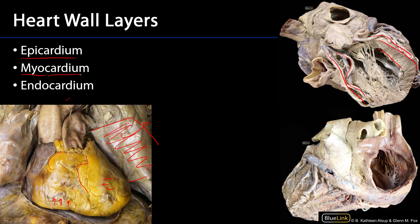The myocardium is then lined by endocardium, which covers the internal surface of the heart, including the cusps of the valves. We can see some elaborations of that here.